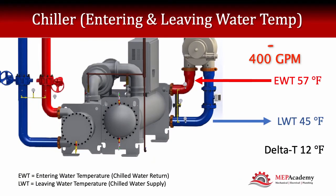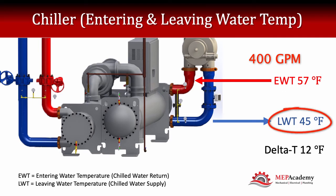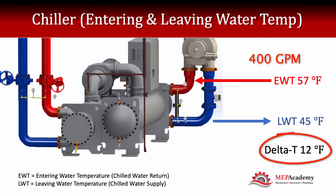Looking at our chiller, we have 400 GPM, 57-degree entering water temperature for chilled water return, and 45-degree chilled water supply. That gives us a Delta T — the difference in temperature between supply and return — of 12 degrees. So 400 GPM is our flow, and 12 degrees is our Delta T.